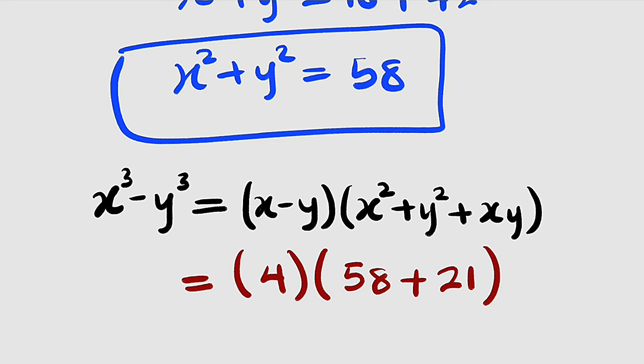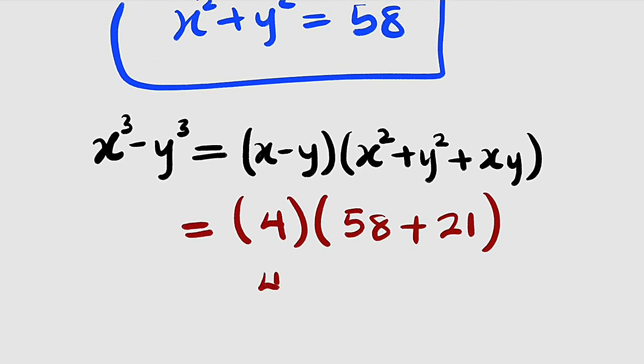58 plus 21 is 79. So we have 4 multiplied by 79. And what is 4 multiplied by 79? It is equal to 316.